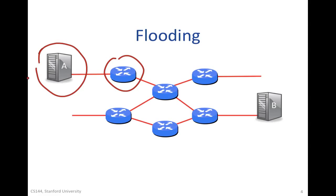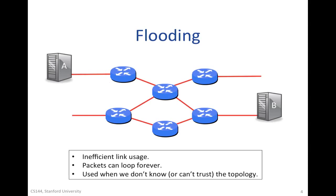But because it's so inefficient, it's really only used at times, at instances when we know nothing about the topology, or we can't trust our knowledge of it. And we need to be able to reach every node. So we'll see a couple of examples of this later, particularly at times of transition when we're not quite sure what's going on. So in summary, it's inefficient in link usage, packets can loop forever, and it's used when we don't know or can't trust the topology.